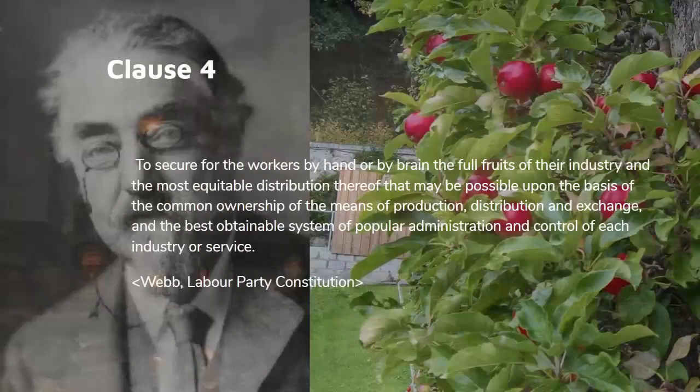Fast forward to 1919 and you get the Labour Party adopting very similar principles in its constitution, where it says it will secure for the workers by hand or by brain the full fruits of their industry, and the most equitable distribution thereof that may be possible upon the basis of the common ownership of the means of production, distribution and exchange. This was the Labour Party constitution which was jettisoned by Blair when he shifted Labour to become the Red Tories.